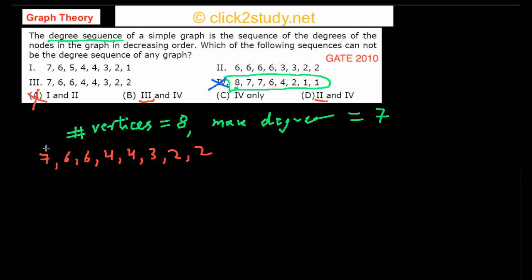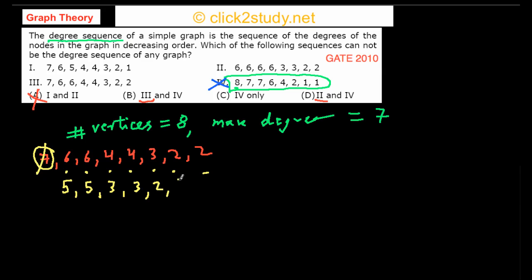The first step is to remove the highest-degree vertex. We remove the node with degree 7, which connects to the next 7 vertices in the sequence. Each of those vertices loses one degree. So: the next terms become 5, 5, 3, 3, 2, 1, 1. That's what we are left with after removing the degree-7 node. Next, we remove the degree-5 vertex and repeat the process.